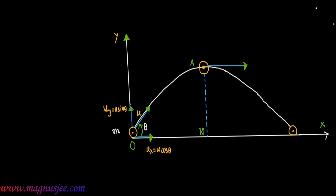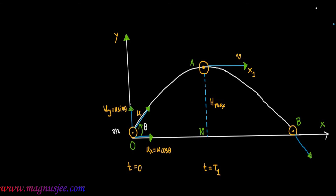At the highest point A, the projectile has a tendency to move along the tangent AT' with velocity V. V is the final velocity at the highest point A along the tangent. At time T equal to 0 the projectile is at O, and at point A, T equals T1, which is the time of ascent — the time taken by the projectile to move from O to A during upward motion. B is the point at which the projectile strikes the ground with velocity V prime.